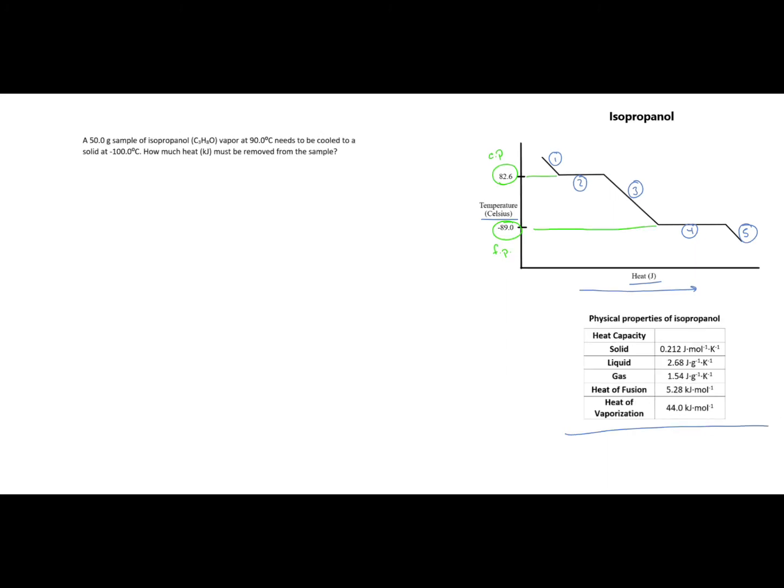Let's start with region one. This is where we're going to take our vapor that's at 90 degrees C and cool it down to the condensation point. Here's my equation. I did label this Q1 so that we know what section it corresponds to. I know my mass for my problem is 50 grams. I need my specific heat.